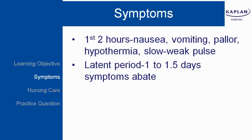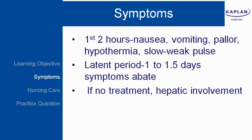During the latent period, which is one to one and a half days after the poisoning, symptoms may abate. If no treatment is received, there could be hepatic involvement and you will see right upper quadrant pain, jaundice, confusion, stupor, and coagulation abnormalities.